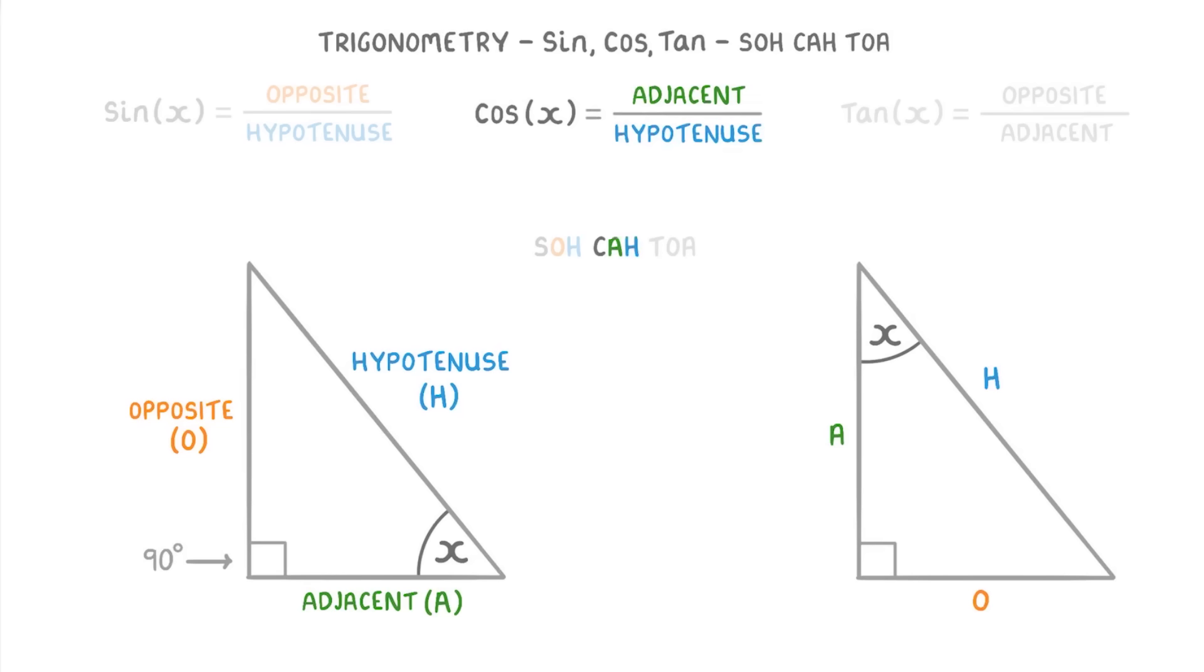And the same rules apply to TOA: T for tan, O for opposite, and A for adjacent. If it helps, you can write SOHCAHTOA as S equals O over H, C equals A over H, and T equals O over A, which makes it a bit easier to spot the equations.